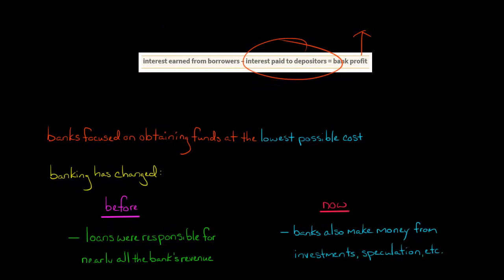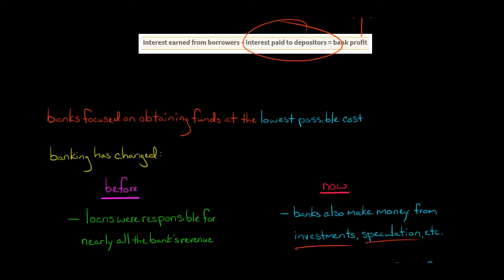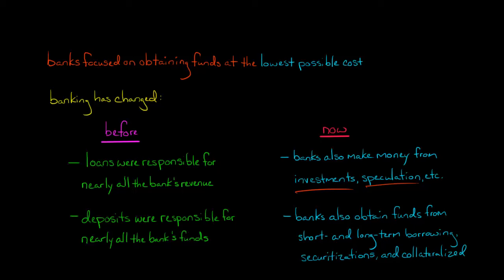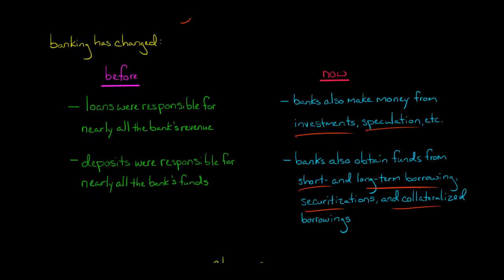Things are more complicated now. In the past, loans were responsible for nearly all of a bank's revenue. Nowadays, banks also make money from investments, speculation from derivatives, and other sources. Also historically, banks got almost all of their funds from deposits. And while deposits are still very important — for commercial banks, deposits are more than 80% of their funds — banks nowadays also obtain funds from other sources: short and long term borrowing, securitizations, mortgage backed securities, and collateralized borrowings.